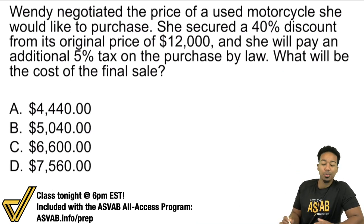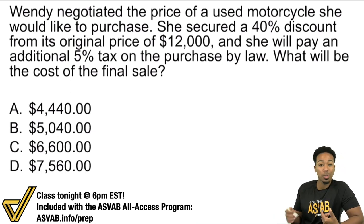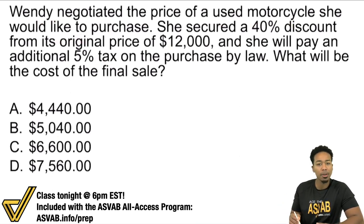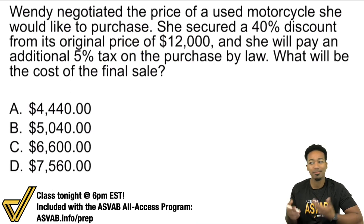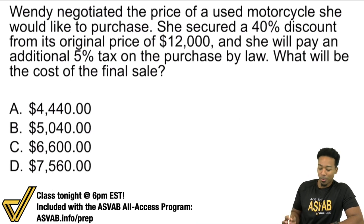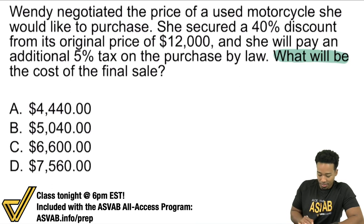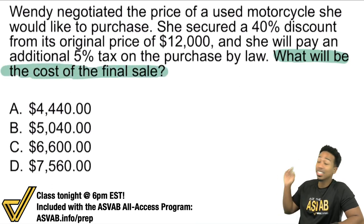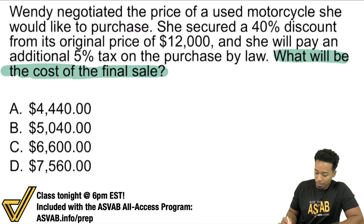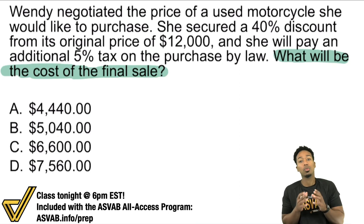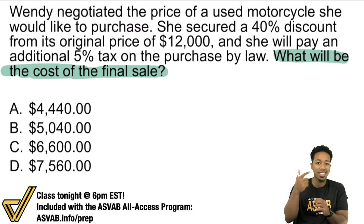First things first when reading any word problem — what's the question? What are we being asked to figure out? Don't worry about going through all of the information at first, because if you don't know what the information is about, it's going to make it a lot harder. So we're going to start with the question sentence itself. All that in green — that's what we want. It says here: what will be the cost of the final sale? We always start with what do we want, then what do we have, and then what's the connection?